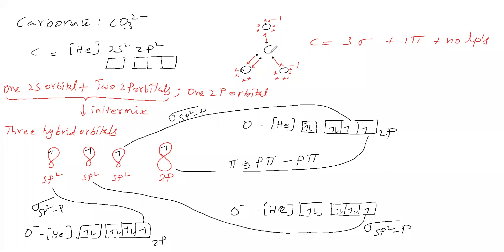The hybridization of carbon in CO₃²⁻ is sp². Therefore the shape is trigonal planar for carbonate.